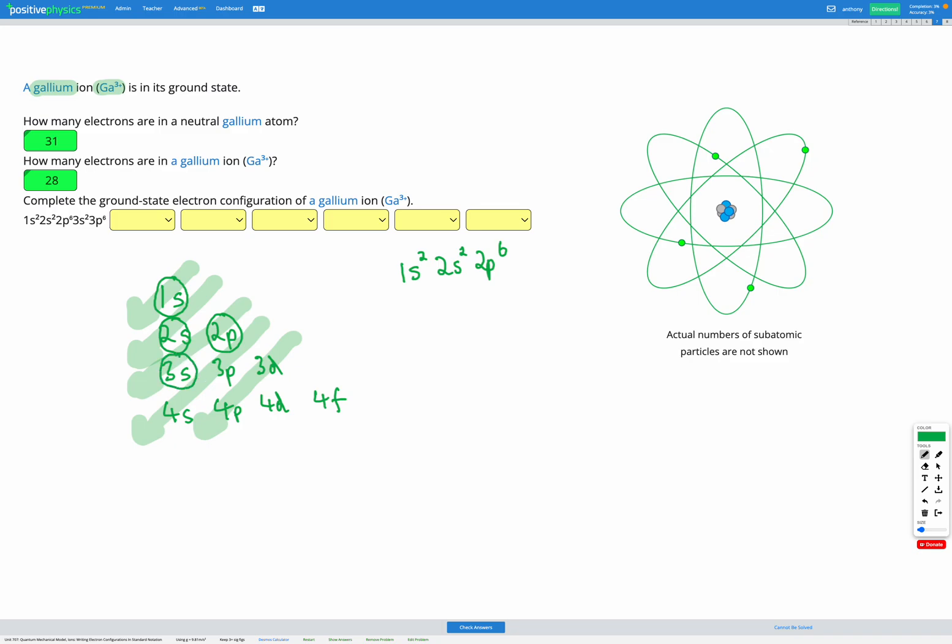Next we have 3s which can fit up to 2, so 3s². Next we have 3p which can fit up to 6, so 3p⁶. We've got 18 electrons in total so far. We need to get to 31.